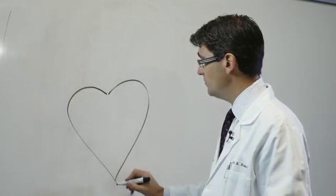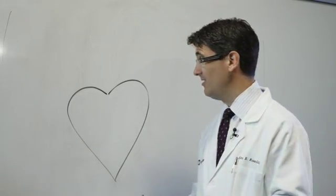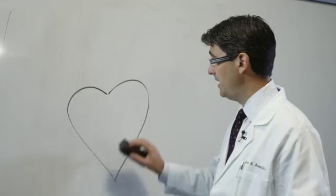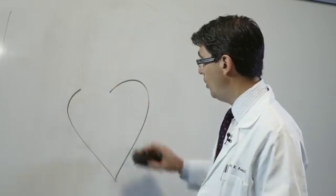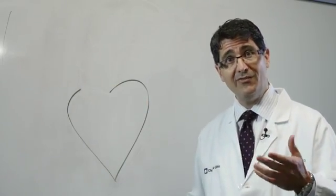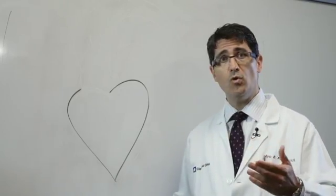If you have an ascending aortic aneurysm associated with a bicuspid aortic valve, it can rupture or dissect. So it's important to know if you have the diagnosis of a bicuspid aortic valve what your ascending aorta looks like.